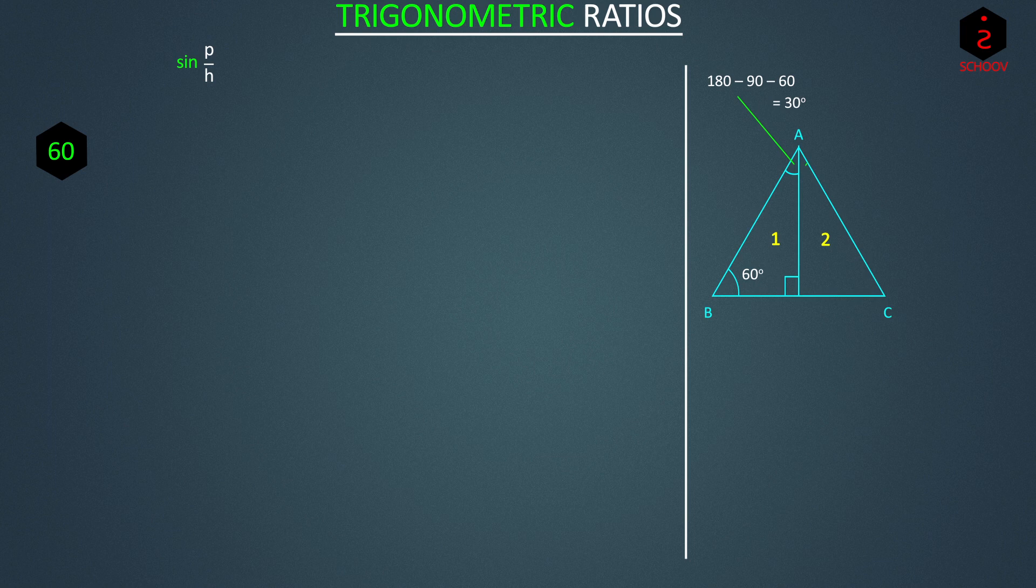Since 1 and 2 are identical, this angle becomes 30 which means angle A is 30 plus 30, 60. Angle C is 60. So all three angles in ABC are 60. Since it is equilateral, all sides must be equal. And if base of triangle 1 is A, base of triangle 2 is also A, and total base of triangle ABC becomes A plus A, 2A.